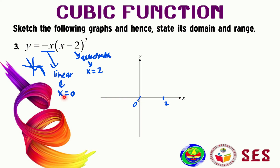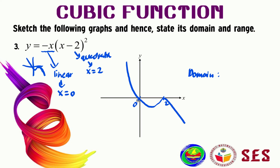The graph passes through x = 0 and turns at x = 2. Because it passes through zero and turns at positive two, the graph looks like this. The domain is negative infinity to positive infinity — there is no restriction on the x-interval — and the range is also negative infinity to positive infinity.